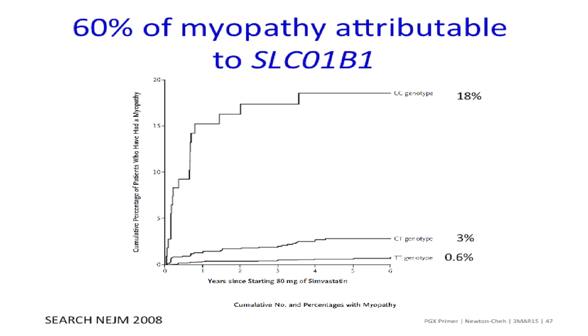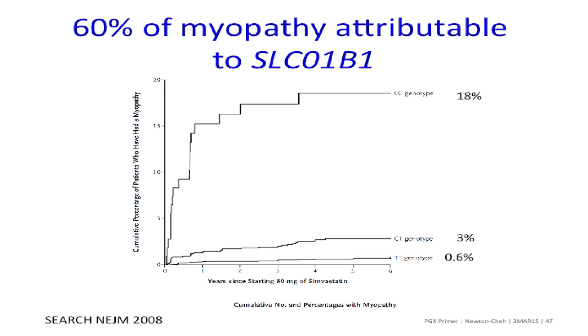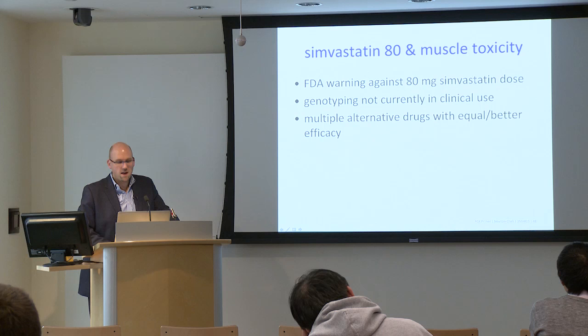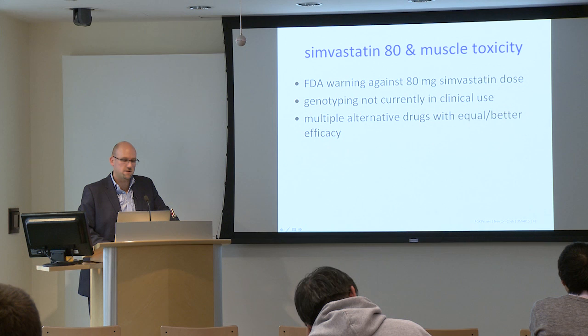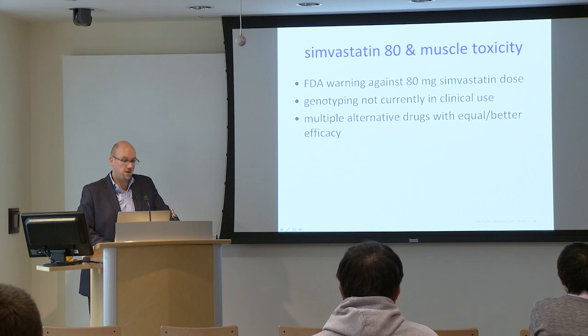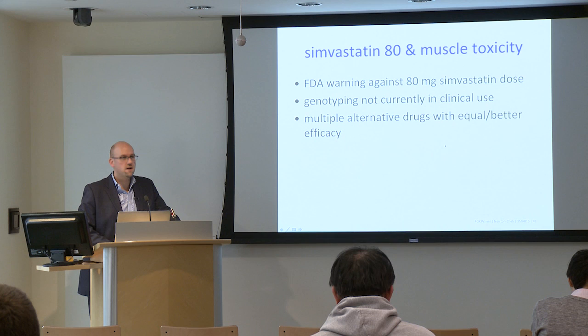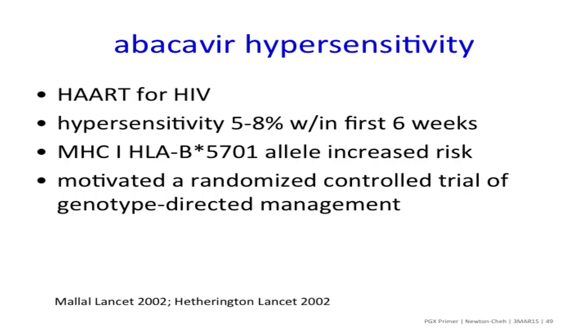Looking at the population-sample frequency, the CC genotype is the less common genotype. There is an FDA warning — many family members probably take simvastatin, it's widely prescribed, it's a generic statin, and very effective in lowering cardiovascular risk. However, the rates of muscle toxicity are not specifically higher with simvastatin than other drugs. Genotyping is currently not in clinical use, there are many alternative drugs with equal or better efficacy, and so while there are well-established genetic effects, they don't translate into clinical differences in approach.